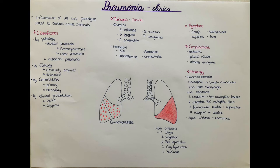Moraxella catarrhalis, a pathogen previously considered part of normal flora, is also a cause of bacterial pneumonia, especially in the elderly — in fact the second most common cause of COPD exacerbations after Haemophilus influenzae. Staphylococcus aureus causes encapsulated inflammation with central necrosis, often just beneath the pleura, and IV drug users are particularly at risk for developing staphylococcal pneumonia.